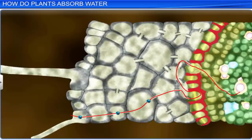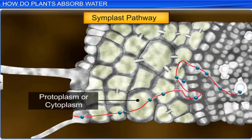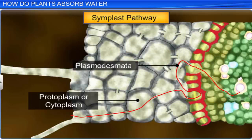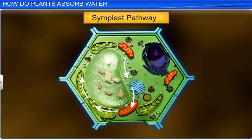On the other hand, the symplastic pathway is a system of interconnected protoplasms. In symplastic movement, water travels through the cell cytoplasm, while intercellular movement is through the plasmodesmata. Water movement takes place down the potential gradient. As water enters the cells through the not-so-permeable cell membrane in the symplastic pathway, water movement is slower. However, the symplastic pathway is aided by cytoplasmic streaming, that is, the movement of the cytoplasm.